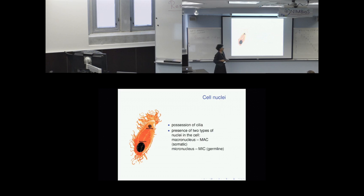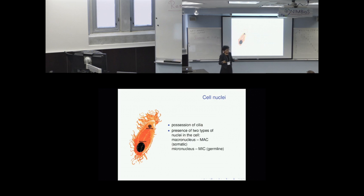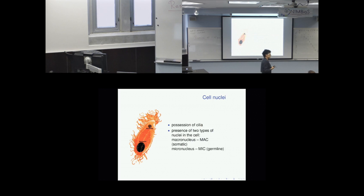All ciliates contain two types of nuclei. There's a macronucleus and a micronucleus. The macronucleus is somatic — it is responsible for preservation of the life of the organism and encodes all of the proteins and other molecules that keep the organism alive. The micronucleus is called the germline and is kept as storage information.